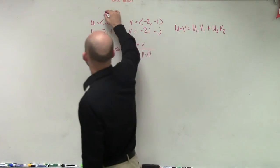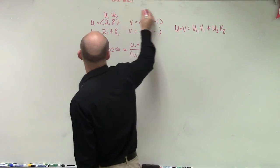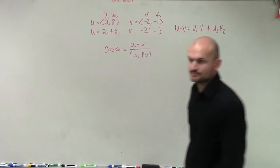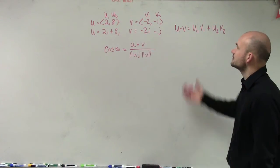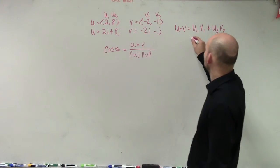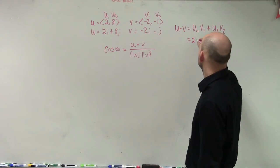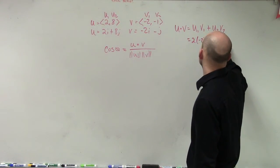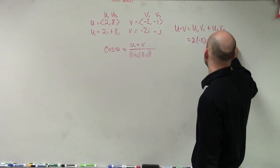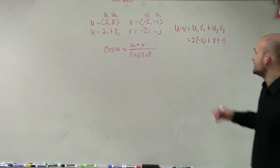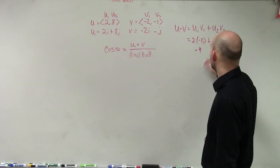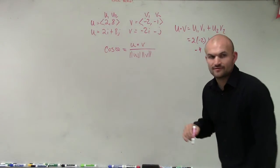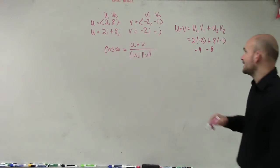We need to identify u1, u2, v1, and v2. Plugging in the values: 2 times negative 2 plus 8 times negative 1. That gives negative 4 minus 8, which equals negative 12.